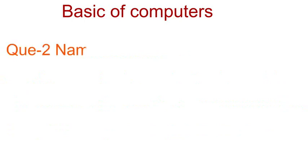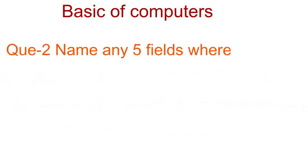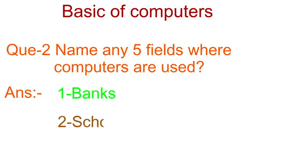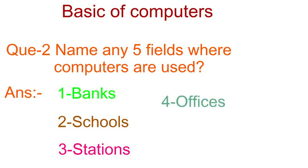Question number two: Name any five fields where computers are used. Answer: Number one — Banks. Number two — Schools. Number three — Stations. Number four — Offices. Number five — Hospitals.